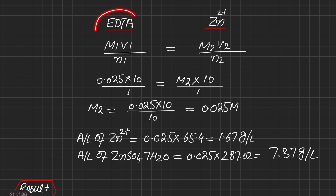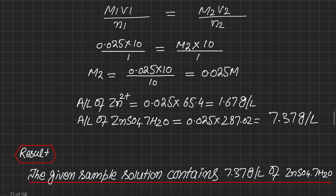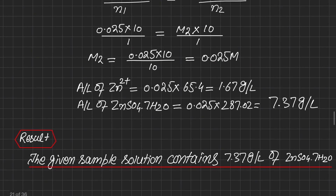To carry out the calculations, we write EDTA on one side and zinc on the other side. The molarity formula used is M1·V1/n1 = M2·V2/n2. Here M1 is the molarity of EDTA (given as 0.025 M), V1 is the burette reading (10 mL), and the molar ratio is 1:1 because one molecule of EDTA reacts with one molecule of zinc. M2 is the molarity we need to find, and V2 is the volume of sample taken in the flask (10 mL). After rearranging, M2 = 0.025 molar.